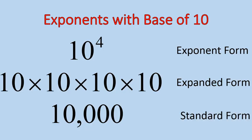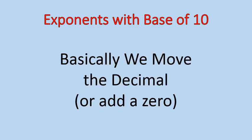So when we're writing out the number like this, you'll notice that our exponent, 4, is the same as the number of zeros. 10,000 has 4 zeros. 10 is a very special number, and when we have that exponent with a base of 10, it basically means either adding zeros or moving a decimal, sometimes a combination of those. So basically, we are going to move a decimal and add zeros today.